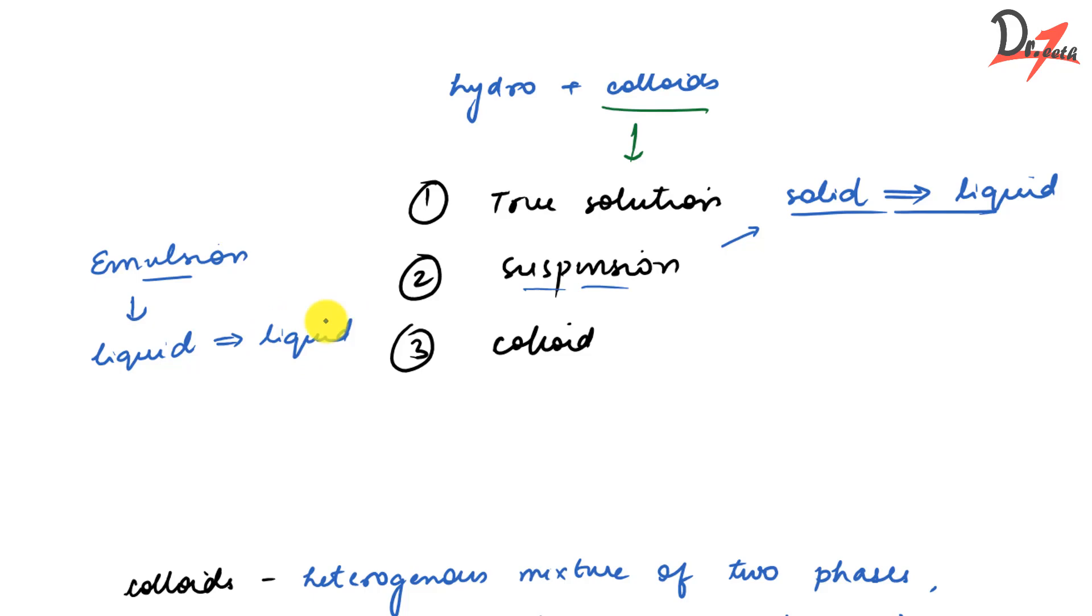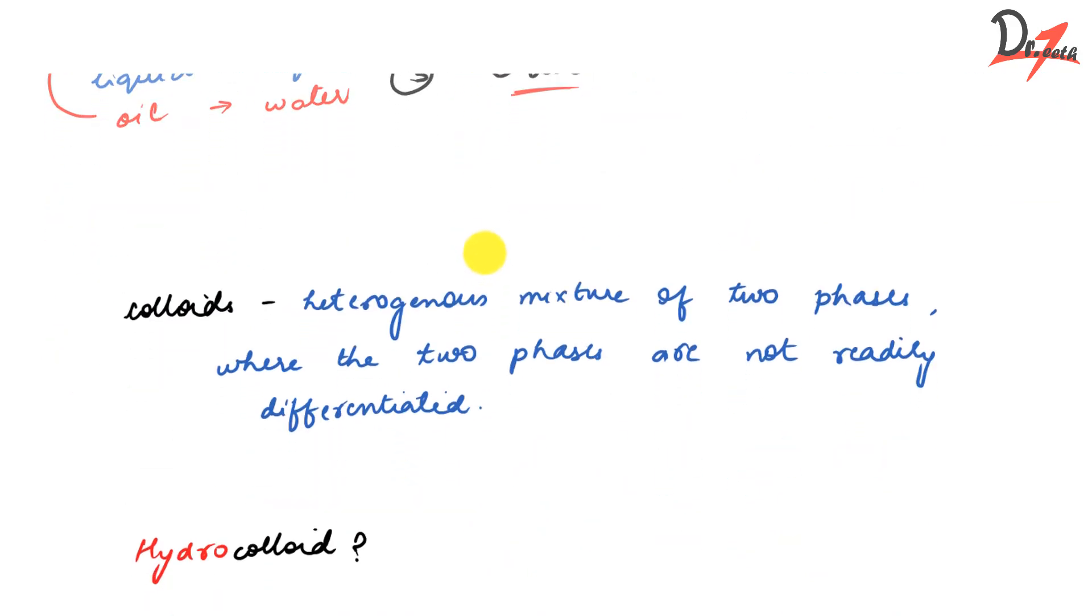So a suspension is solid dispersed in liquid, but the particles are large here. So you can differentiate it with your naked eye or by a microscope. We have one more term and that is emulsion. Now emulsion is when liquid is dispersed in liquid. For example, if we have oil which is in water, so that will make an emulsion. Now colloid is also a heterogeneous mixture means it is just like suspension only. It is heterogeneous, not a homogenous mixture like the true solution. But here the two phases are not readily differentiated.